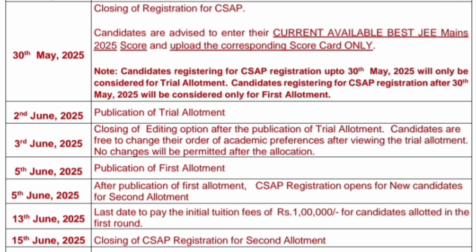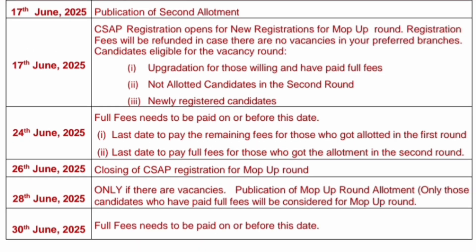15th June 2025 is the closing of CSAP registration for the second round seat allotment. You can apply till that date, but those who apply at that point will only be eligible for round 2. 17th June will be the publication of the second round seat allotment result, and from 17th June 2025, registration for the mop-up round opens.